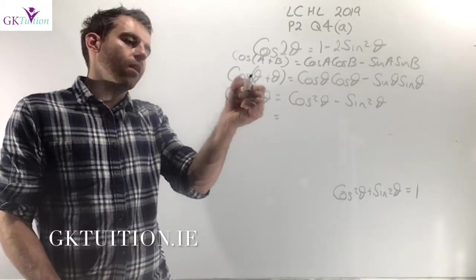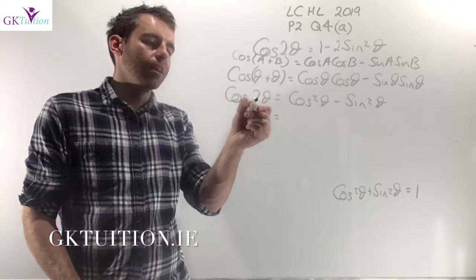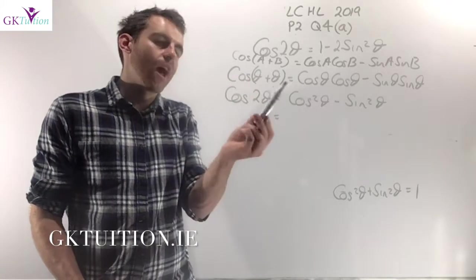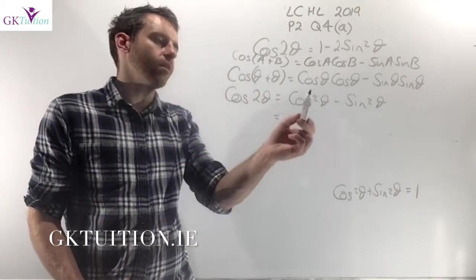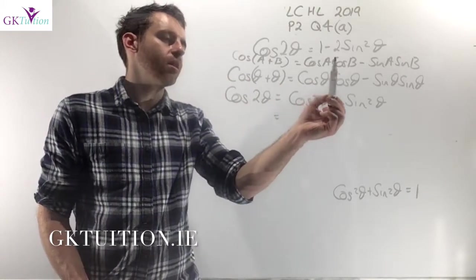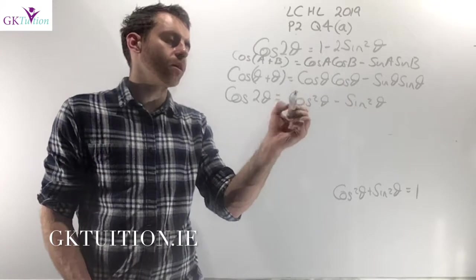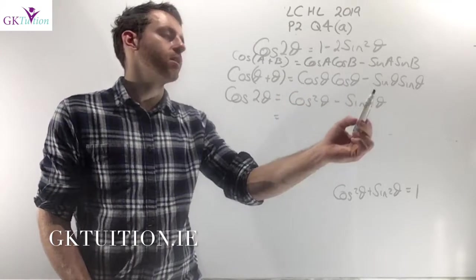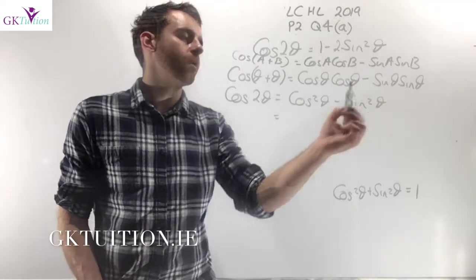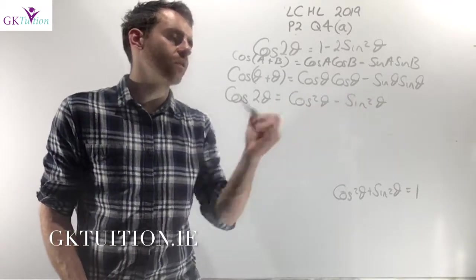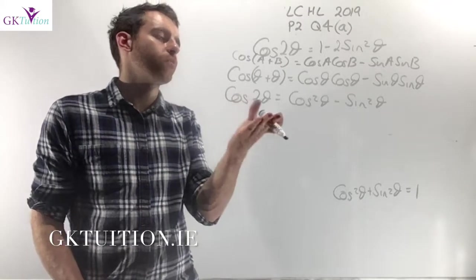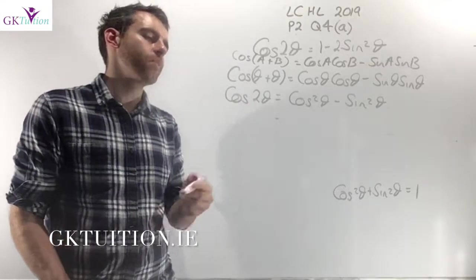cos(theta + theta) gives me cos(2theta) because I just add the thetas together. cos(theta) multiplied by cos(theta) is cos²(theta) and sin(theta) multiplied by sin(theta) is sin²(theta). So now I'm left with cos(2theta) = cos²(theta) - sin²(theta) at this stage.